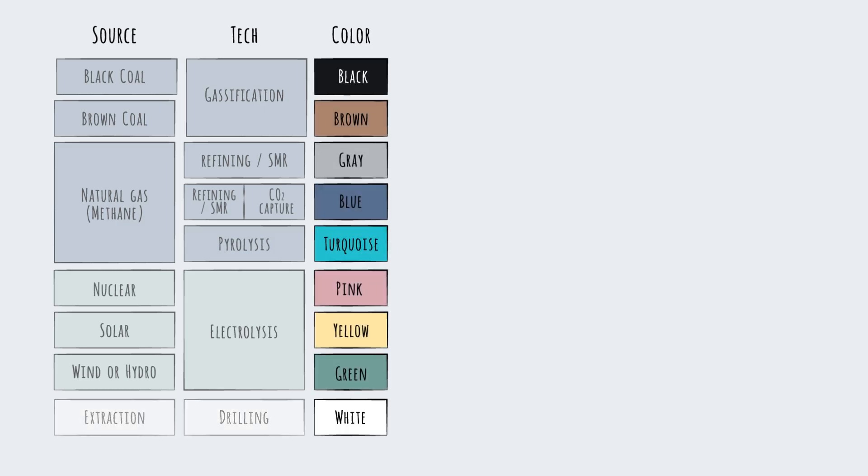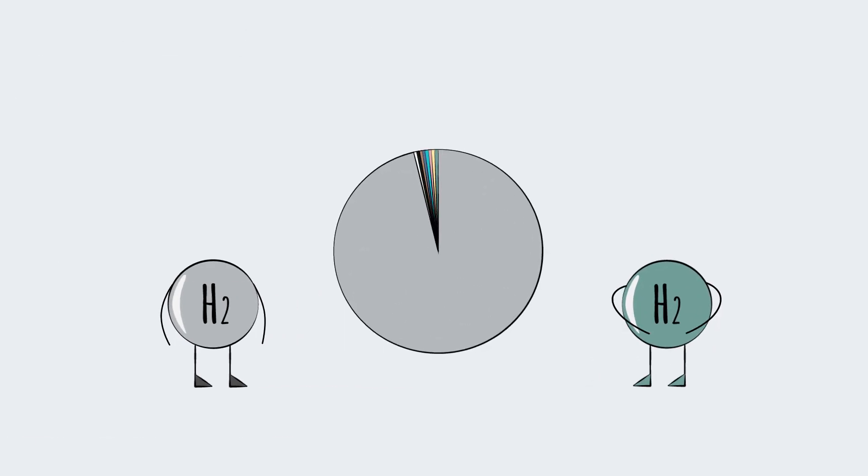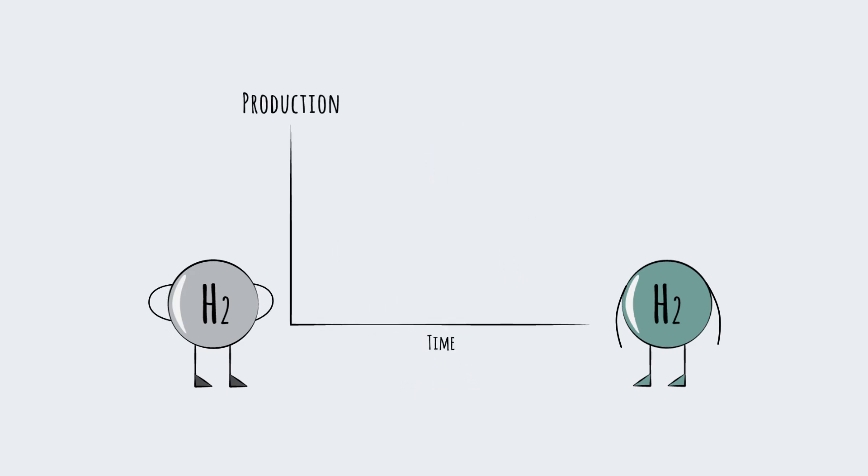Most existing hydrogen production is for higher emission gray hydrogen. Most newer hydrogen production driven by demand for clean energy storage is for green hydrogen—we include yellow in this group. So the shift in production to expect can be generalized to more growth in green, less growth in gray.